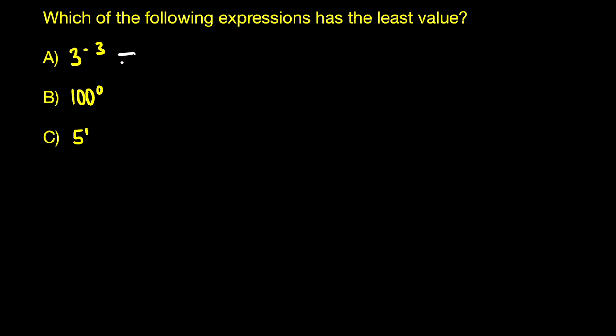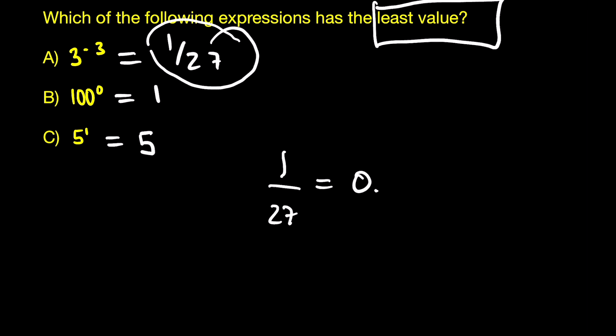And the final one, 5 raised to the power of 1, is 5. So if we put the answers down for every option, you can see that the lowest one, or the least value, which is what they're asking us in the question, is going to be the first option, 1 over 27. Because if you worked it out, that's equivalent to 0.03 in decimals.